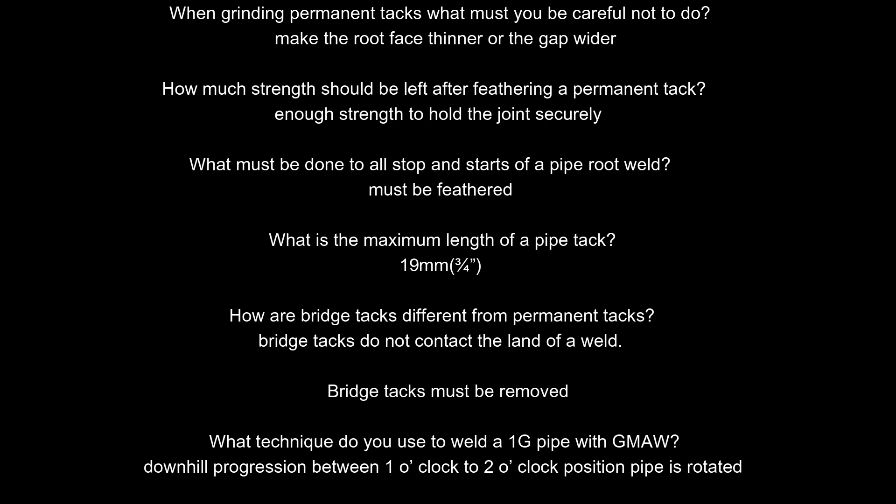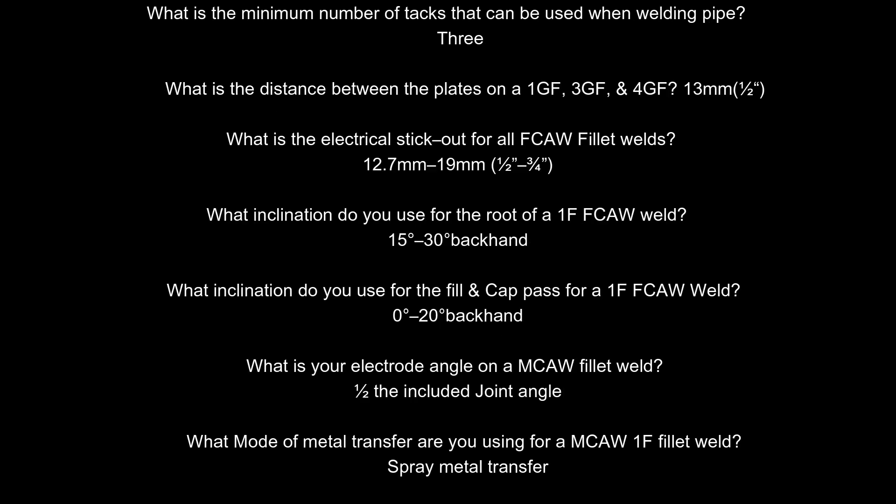What technique do you use to weld a 1G pipe with GMAW? Downhill progression between the 1 o'clock to 2 o'clock position; the pipe is rotated. What is the minimum number of tacks that can be used when welding pipe? Three.